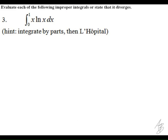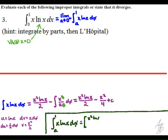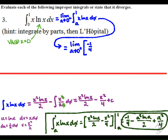In the third problem, we have an improper integral because the natural log of x has a vertical asymptote at x equals 0. We rewrite this as a limit with a variable lower limit replacing 0, since 0 is not in the domain of this function. This integral requires integration by parts, which gives us the expression. Evaluating the definite integral yields: negative one-fourth minus (a squared times the natural log of a) over 2, plus a squared over 4.